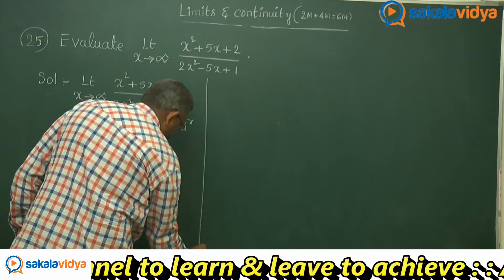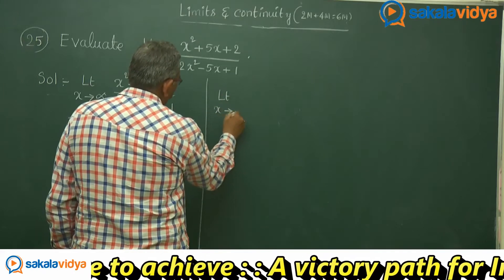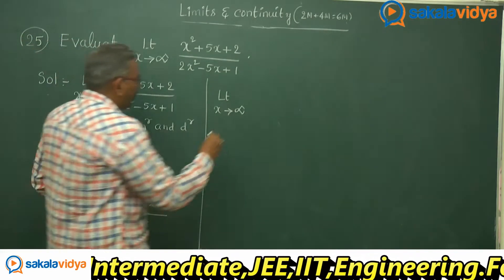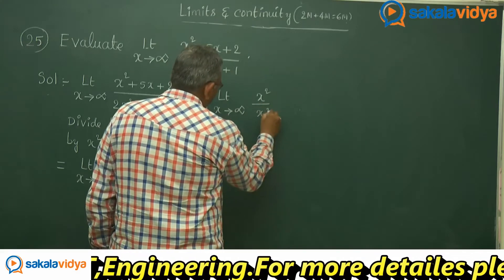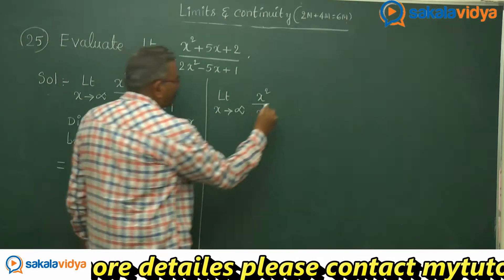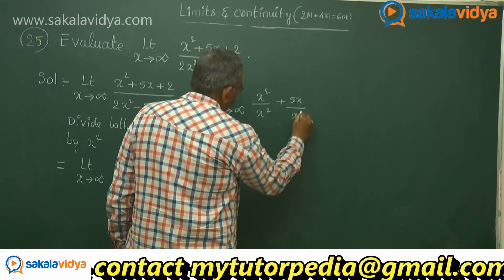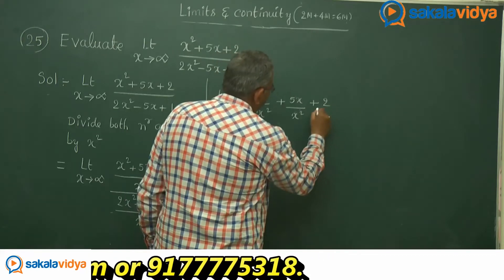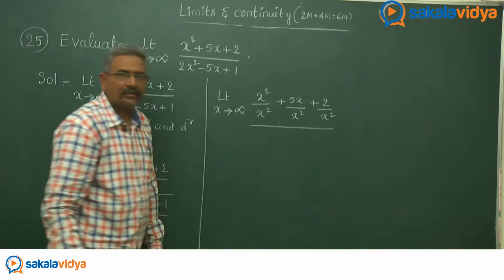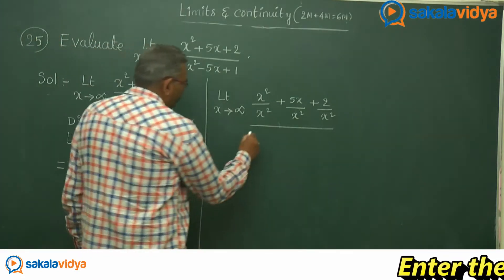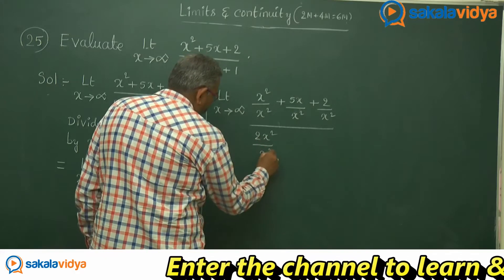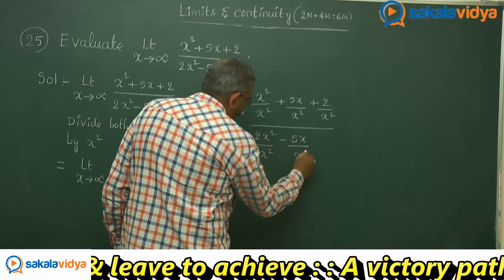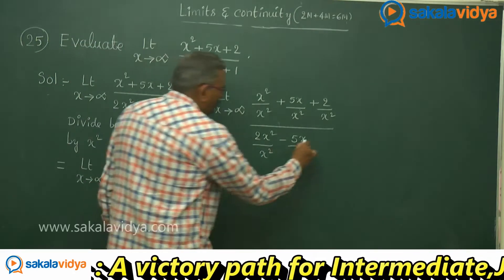Now we can write limit x tends to infinity. Let us simplify the numerator: x squared over x squared, plus 5x over x squared, plus 2 over x squared. For the denominator, that will be 2x squared over x squared, minus 5x over x squared, plus 1 over x squared.